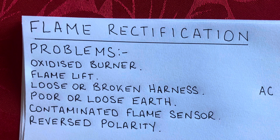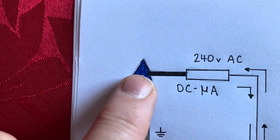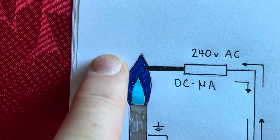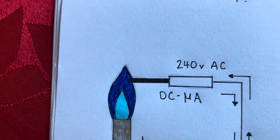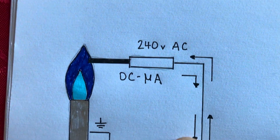The first problem is an oxidized burner — basically a rusty burner — where you're not getting a good earth connection. That's one to look out for. The second is flame lift: the flame isn't touching the probe properly, possibly due to poor oxygen supply into the boiler or a problem with the flue, which can lift the flame away from the probe.